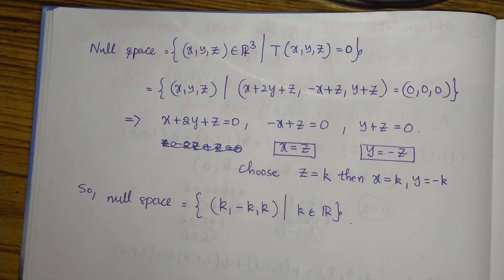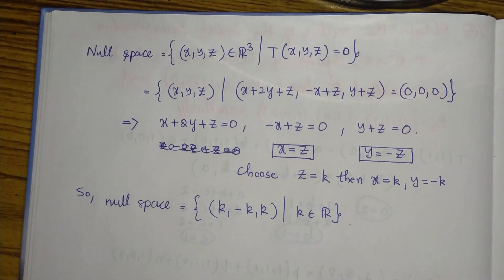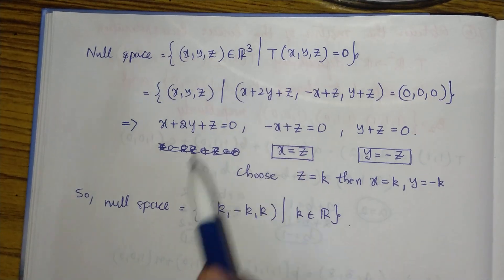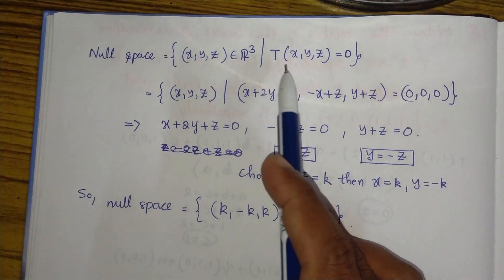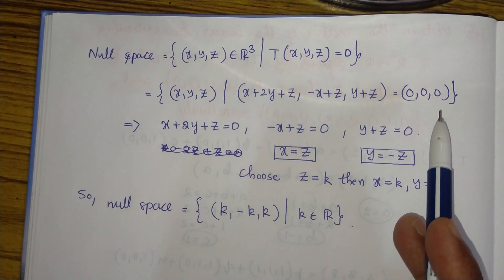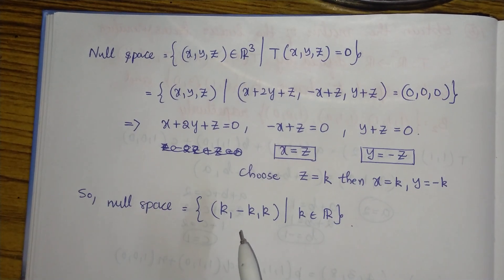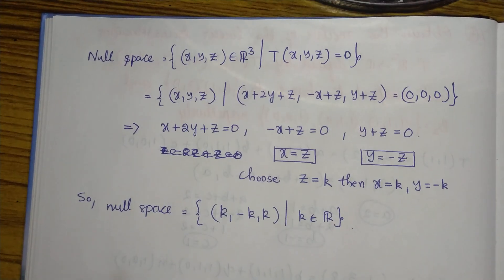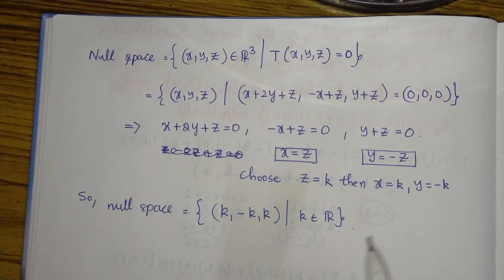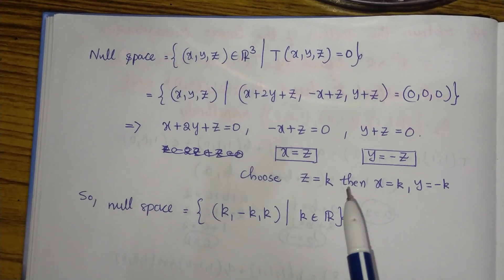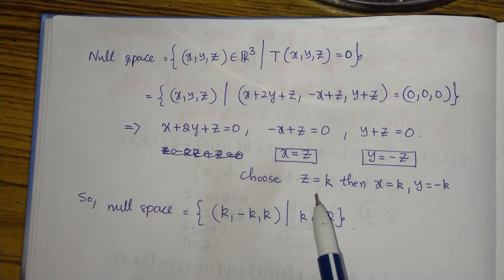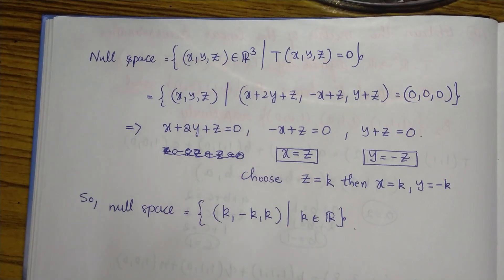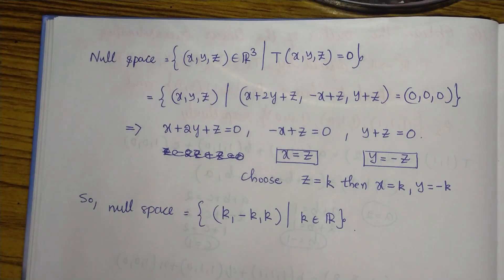For the null space, we find all vectors in the domain R³ that are mapped to the zero element in the co-domain. Setting T(x, y, z) = (0, 0, 0) and equating, we get: x + 2y + z = 0, −x + z = 0, and y + z = 0. Writing x and y in terms of z — let z = k — we get x = k and y = −k. Therefore the null space is {(k, −k, k) : k ∈ ℝ}.